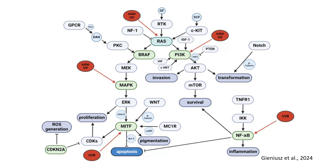On the left, RAS also activates the MAPK pathway via BRAF and MEK. This cascade, which culminates in ERK activation, drives cell proliferation and evasion. At the intersection of several pathways, we find MITF, a critical transcription factor.